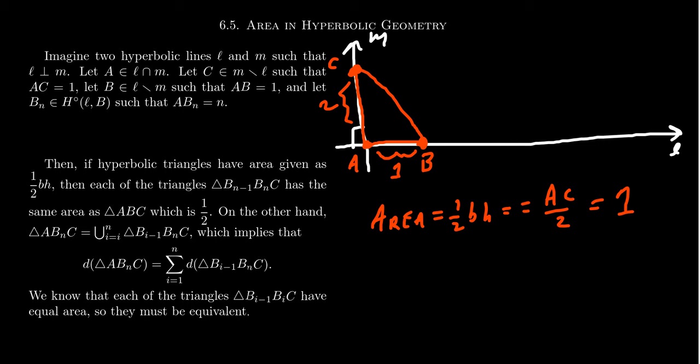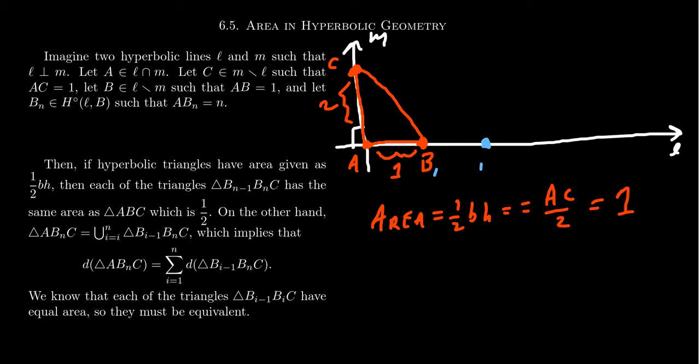So what we want to do next is we're going to choose some more points on this same side of the line M so that we can keep on replicating this distance. Let's call this first point B1. And we're going to choose another point along this line, we're going to call it B2 so that the distance between B1 and B2 is itself 1. Therefore, the distance between A and B2 is 2. Let's take a point B3. The segment B2, B3 will have a measure of 1. Therefore, the segment AB3 will have measure 3. And we keep on doing this over and over again. We can do this by induction. We keep on choosing another point so that the measure of the segment is 1, 1, 1, 1, 1. This will give us that the length of the segment ABN will itself be N. And so let's think about the hyperbolic triangles that we're forming from this construction.